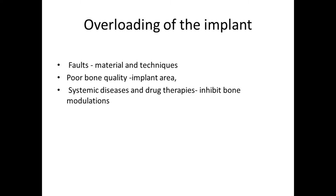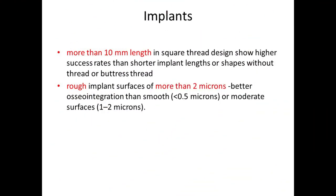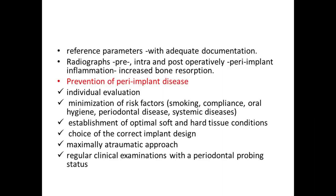Implant overloading can occur due to faulty material or technique, poor bone quality, or systemic disease and drug therapies that inhibit bone modeling. When choosing an implant, a length of 10 mm or more with a square thread design has a higher success rate than shorter implants without threads or with buttress threads. Rough implant surfaces with more than 2 microns are better for osseointegration than smooth or moderately rough surfaces.